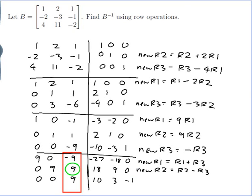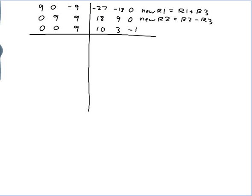I need to start a new page to fit all that in. I've copied what was on the previous page so I can see what I'm doing. My new row 1 is row 1 plus row 3: 9 plus 0 is 9; 0 plus 0 is 0; minus 9 plus 9 is 0; minus 27 plus 10 is minus 17; minus 18 plus 3 is minus 15; and 0 plus minus 1 is minus 1.